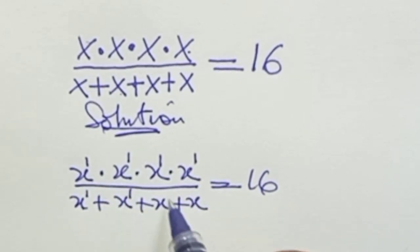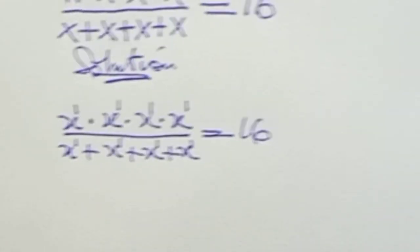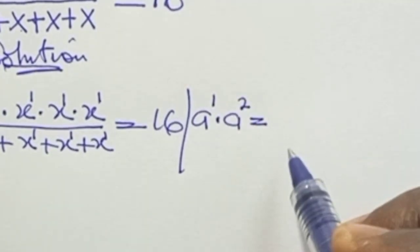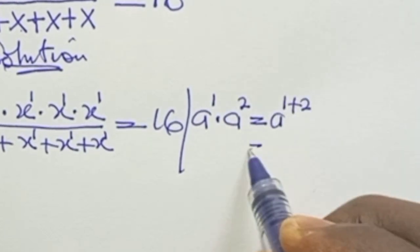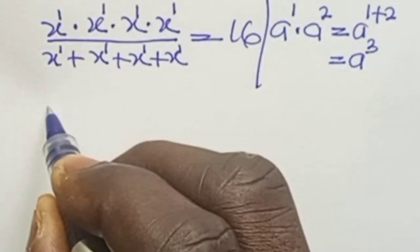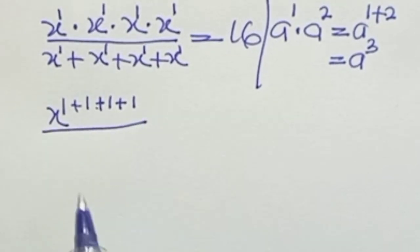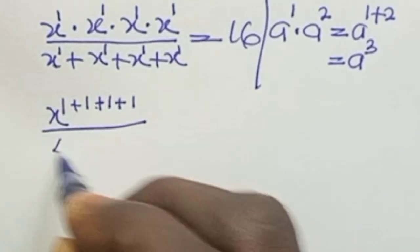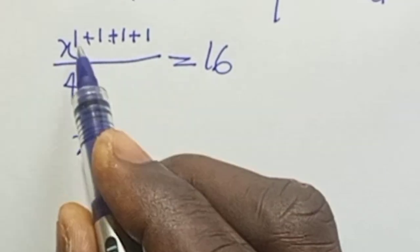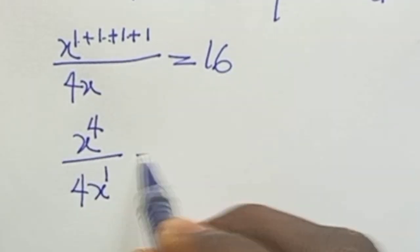Remember, each of the s's is raised to power 1. They are all raised to power 1. And if we consider the fact that a to power 1 times a to power 2 equals a to power 1 plus 2, which equals a to power 3, then s will become s to power 1+1+1+1 in four places, all over x plus 4s, equal to 16.